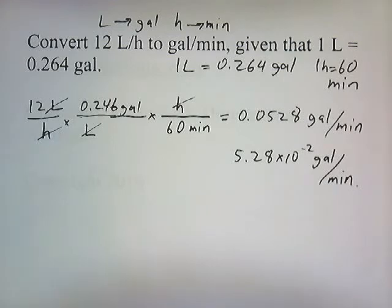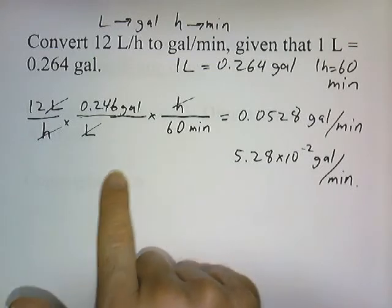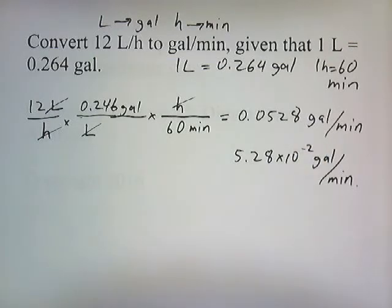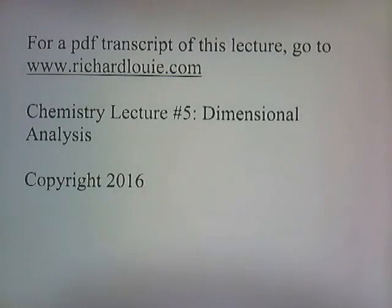Those are the basics of factor labeling. If you plan to have any type of career in the sciences, you need to learn how to do this method. You could probably do these conversions using algebraic methods, but factor labeling makes things easier. In the future there will be long conversions with four or more fractions, so learn how to do this by factor labeling. If you need a PDF transcript of this lecture, go to www.richardlui.com. This has been Chemistry Lecture Number 5 on Dimensional Analysis. Thanks for watching.